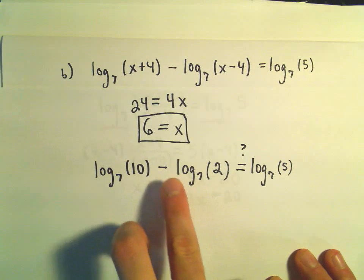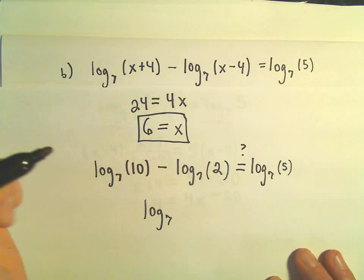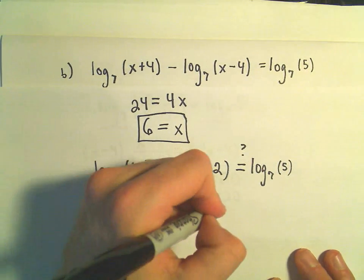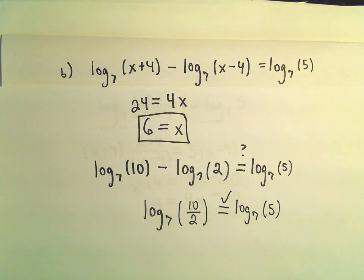Yeah, because remember, we've got subtraction, so we can turn the left side into division. We can make that log base 7 of 10 over 2, which is what we want. That would reduce to log base 7 of 5. So in fact, we have found the one solution to this logarithmic equation.